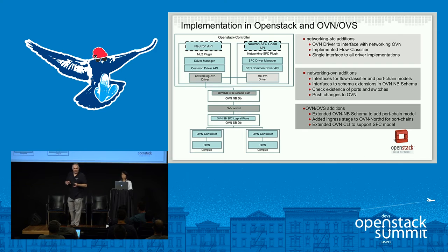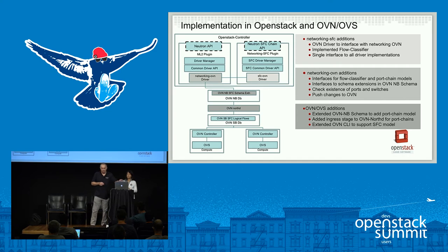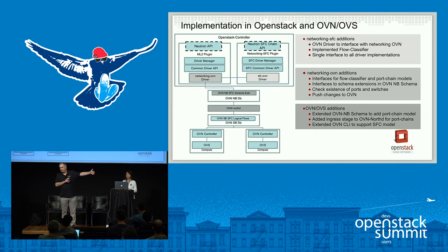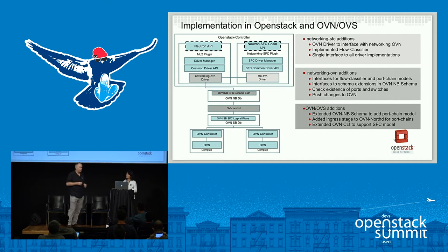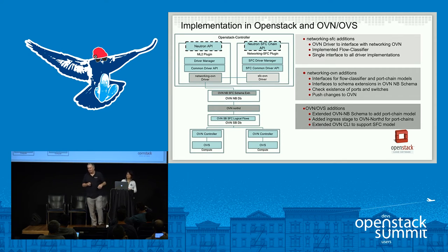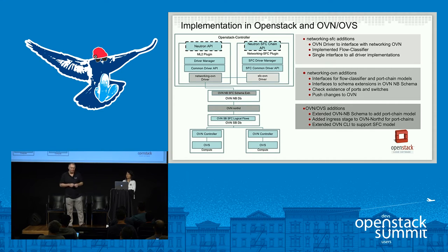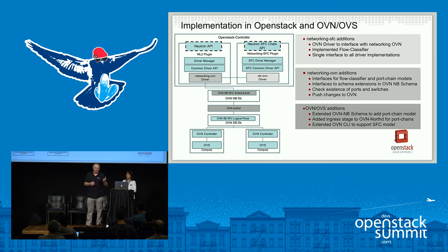We go and talk to networking OVN. Neutron is the source of truth, so if I give a port pair and port chains, I can actually go and check to make sure the ports and logical switches actually exist — doing validation. Networking OVN provides an API link into OVN, so we leverage that to talk directly into the OVN northbound database. Great credits to Cathy and her team and the networking OVN team.